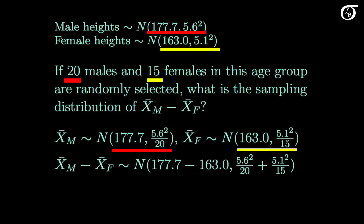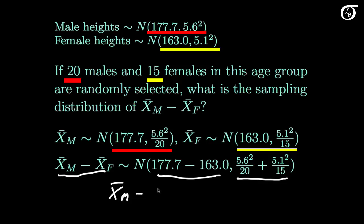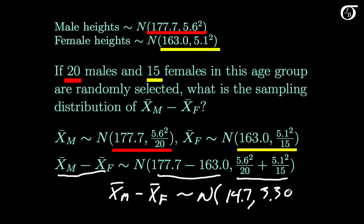Now for the sampling distribution of the difference in sample means, that's going to be approximately normal with a mean equal to the difference in the population means and a variance equal to the sum of the two variances. Carrying out those calculations, X bar m minus X bar f is approximately normally distributed with a mean of 14.7 and a variance of 3.302.